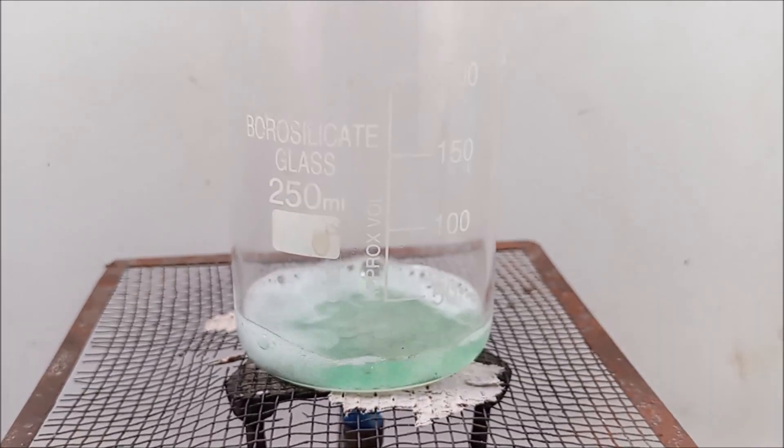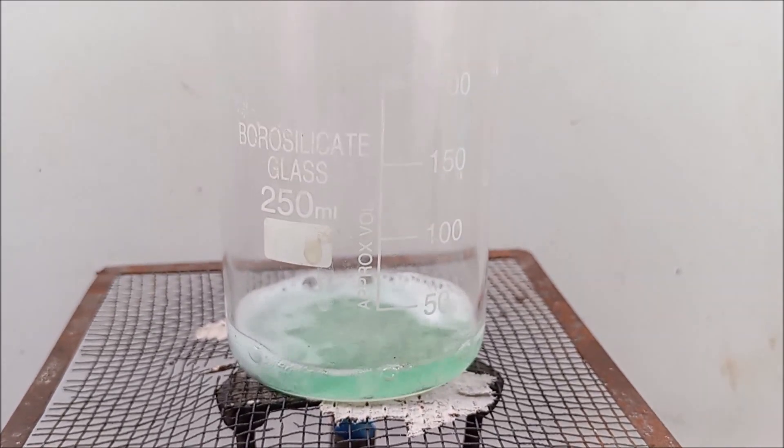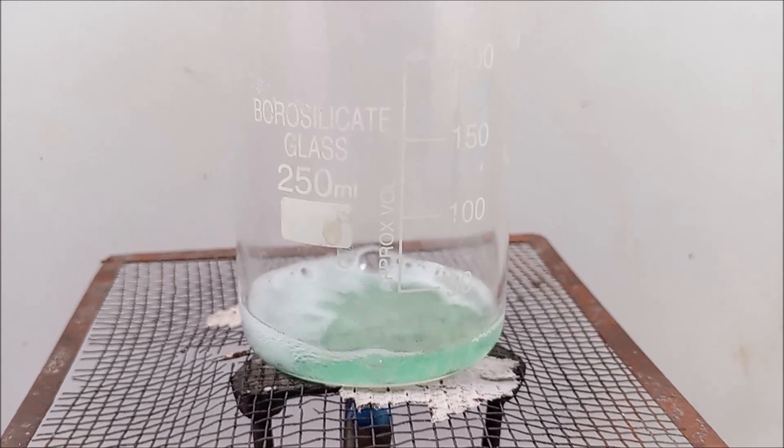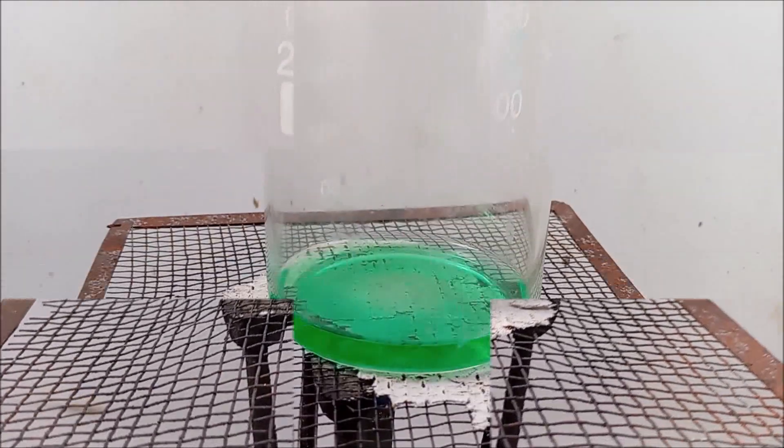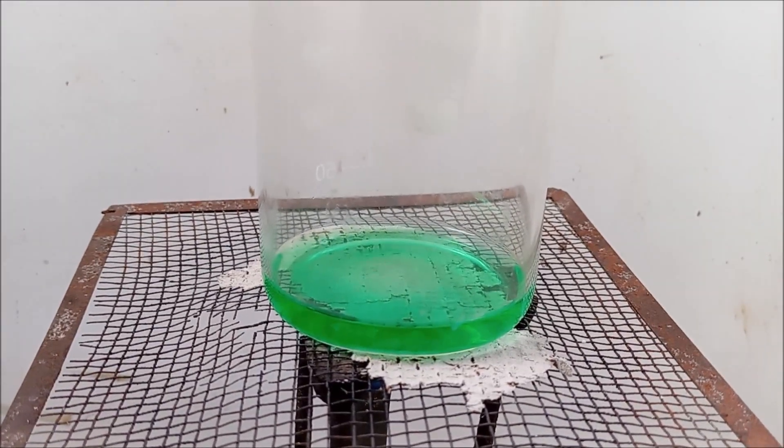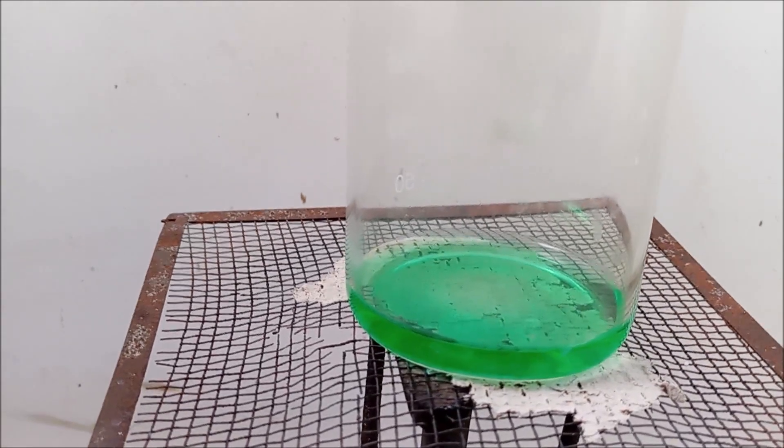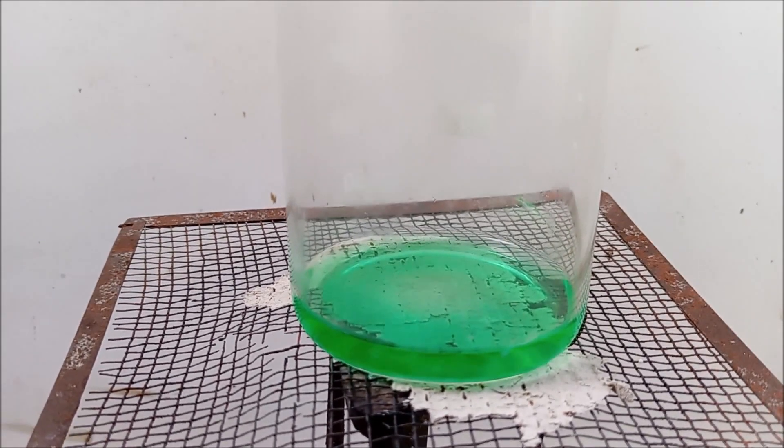Warming is sufficient. If the metal doesn't dissolve completely, warm it again after it reaches room temperature. Now the metal dissolves completely in acid. The color of the solution darkens a lot.